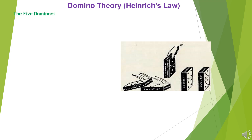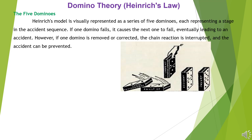The Five Dominoes: Heinrich's model is visually represented as a series of five dominoes, each representing a stage in the accident sequence. If one domino falls, it causes the next one to fall, eventually leading to an accident. However, if one domino is removed or corrected, the chain reaction is interrupted and the accident can be prevented.